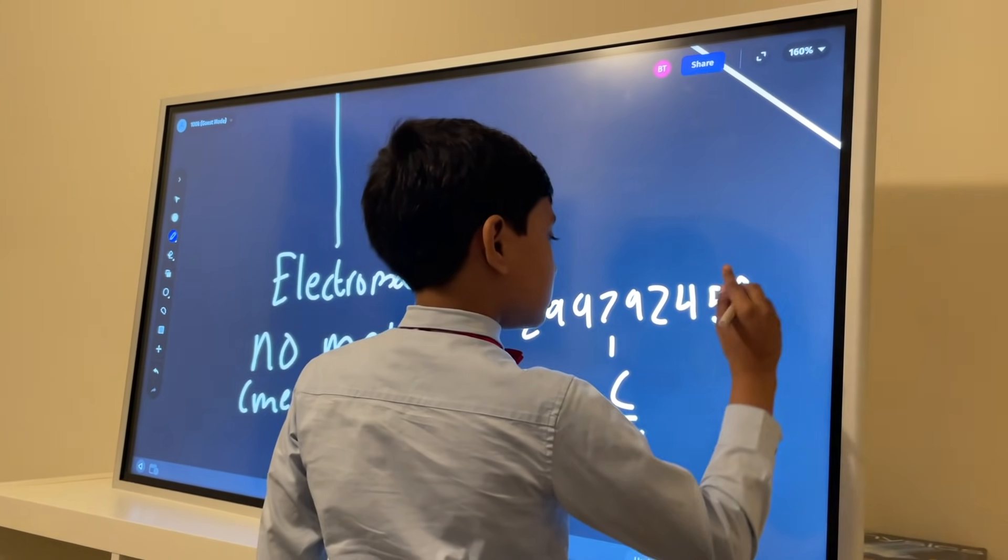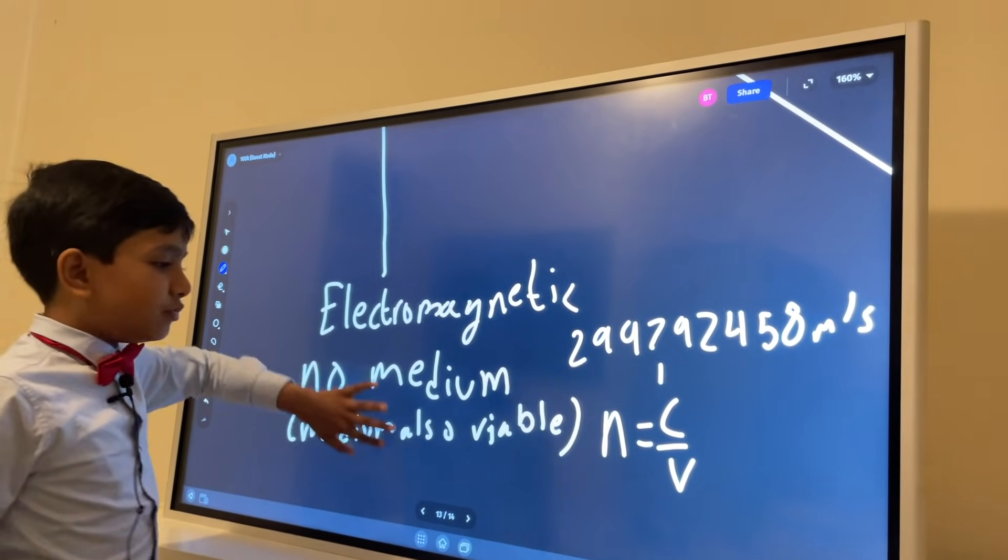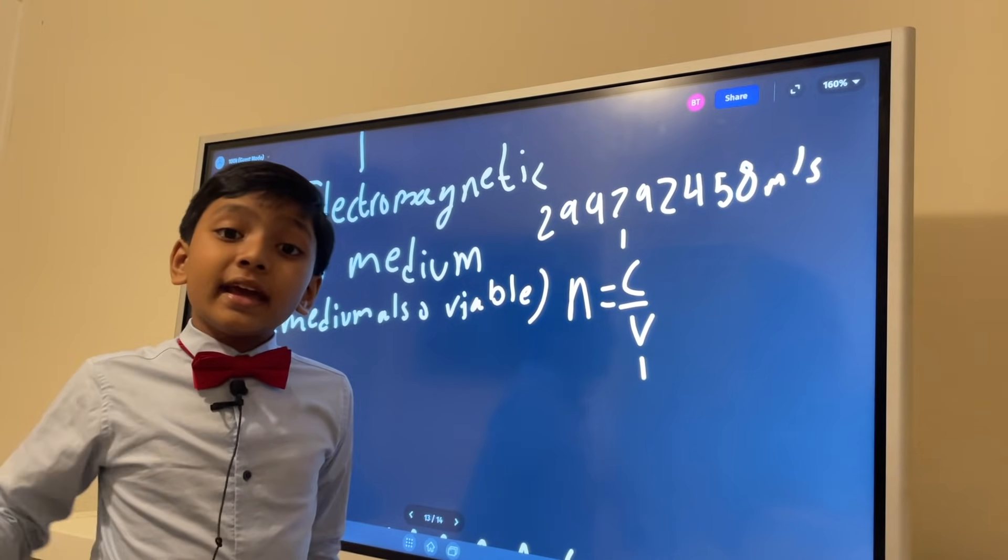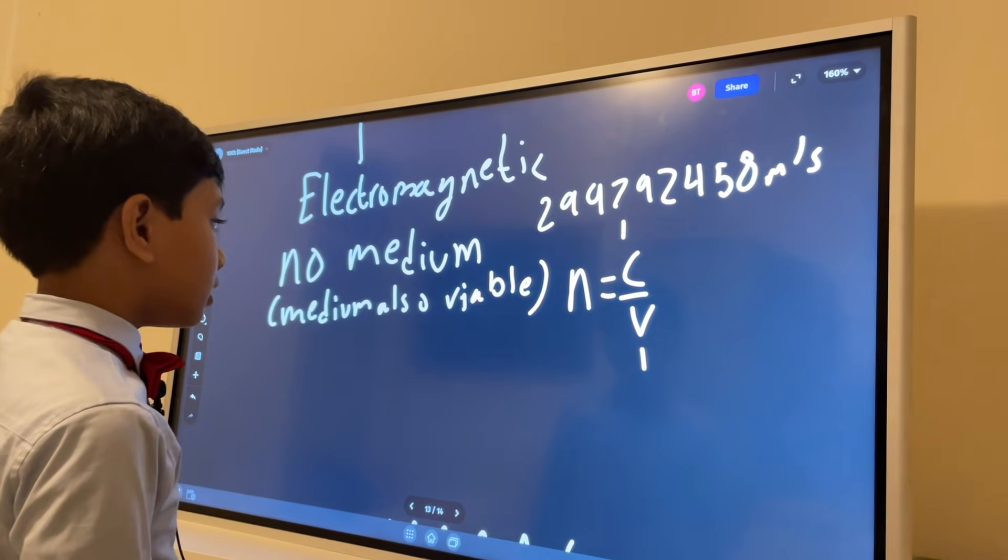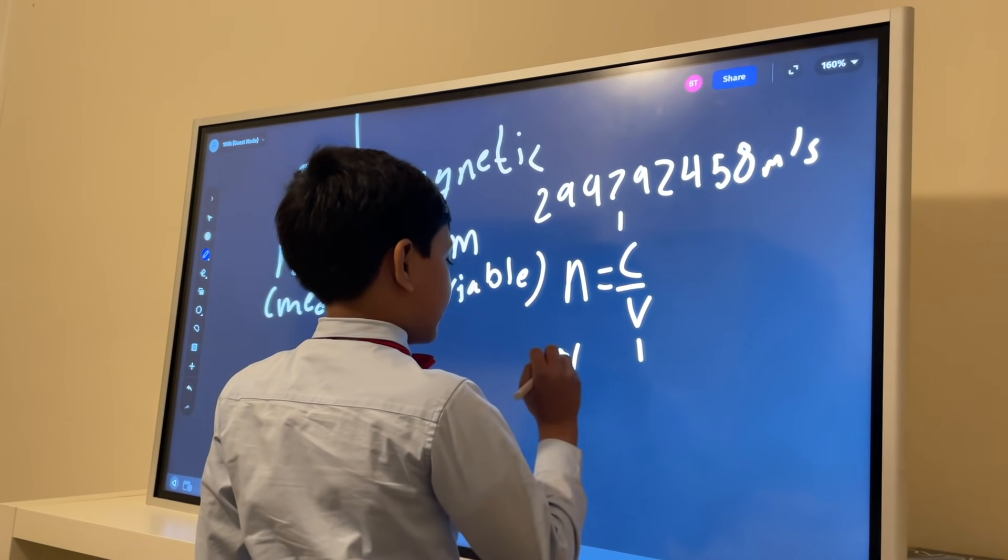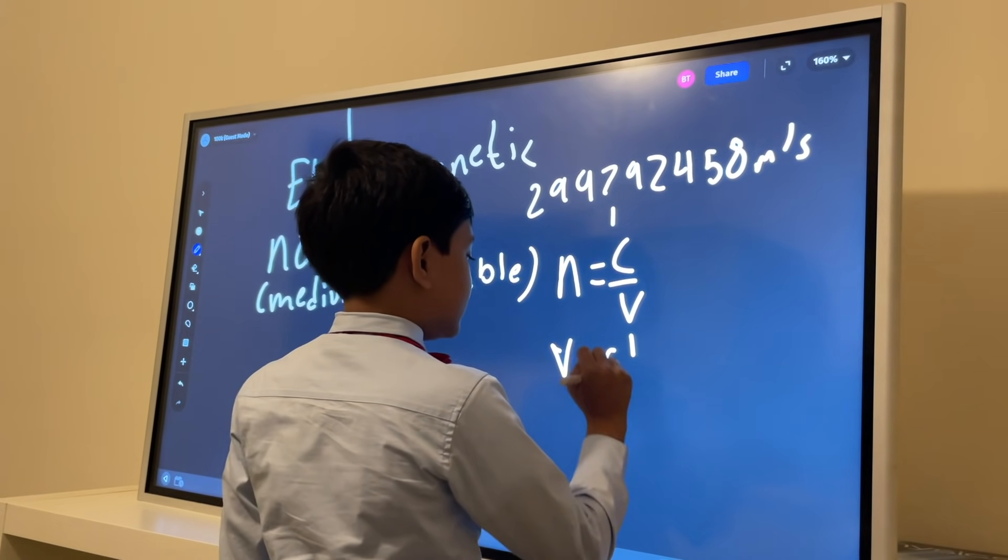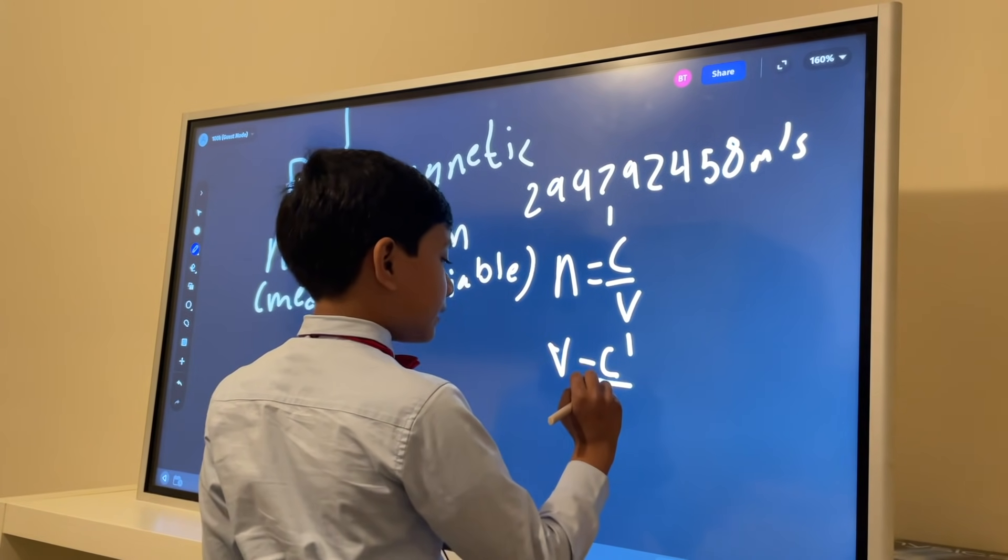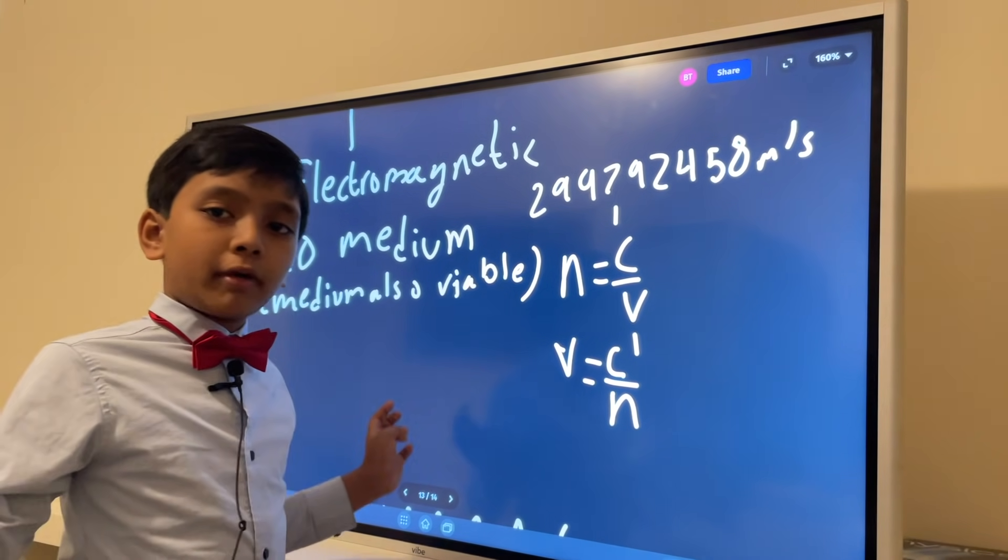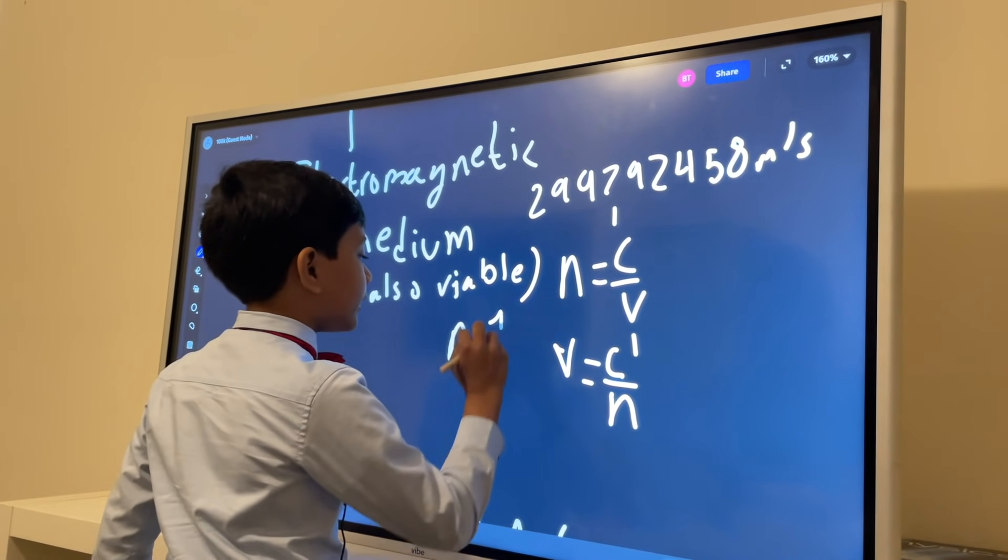So V is the velocity of the light in the material we're talking about. So technically we can just say that the velocity of light is equal to C, the speed of light in a vacuum, divided by the index of refraction of the material you're in. For air and vacuums it is one, but it can also get pretty funky sometimes.